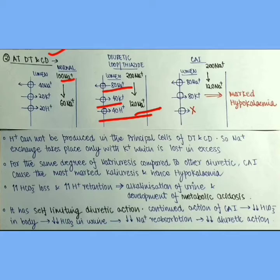Now let us understand the case of carbonic anhydrase inhibitor. It is also a diuretic so more sodium will now come at the distal tubule and collecting duct region. And similarly out of 200, 80 Na+ is reabsorbed and 120 Na+ is secreted into the lumen.